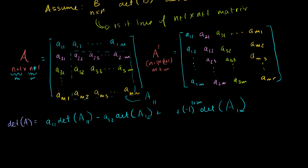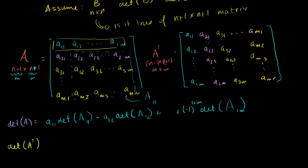Now let's look at the determinant of A transpose. We learned earlier that you don't have to go down a row — you could go down a column. For the determinant of A, we went down the first row with those submatrices. But for the determinant of A transpose, let's go down the first column and get the submatrices that way.